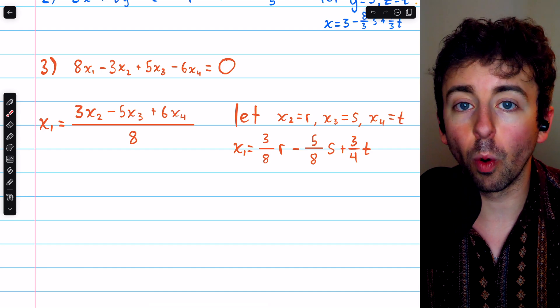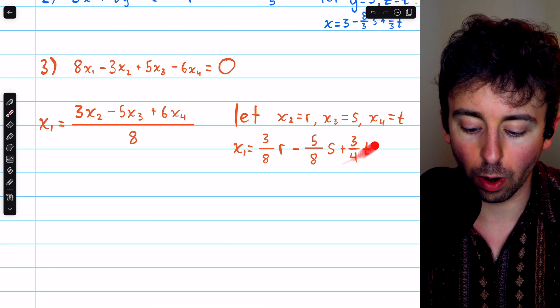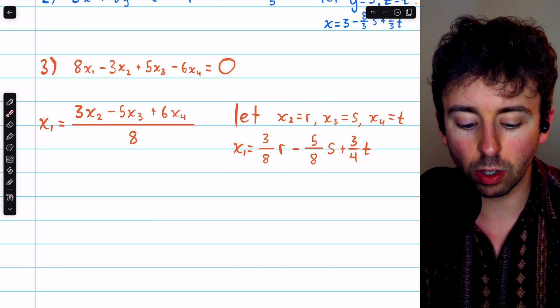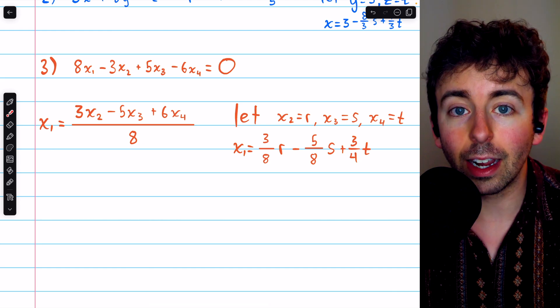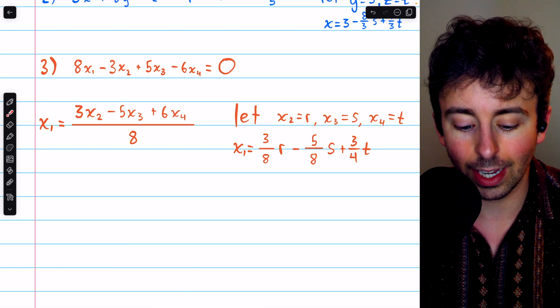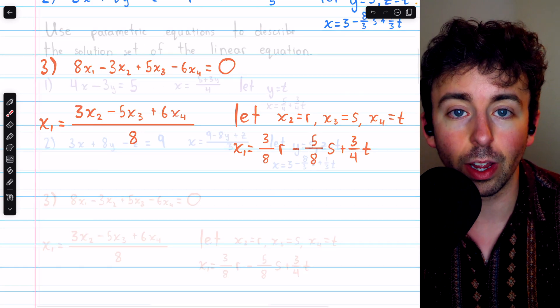So any ordered 4-tuple of this form, x1, x2, x3, x4 of this form, that's going to be a solution to this linear equation. x2, x3, and x4 can be whatever they like, and x1 can be calculated accordingly to get a solution to this equation.